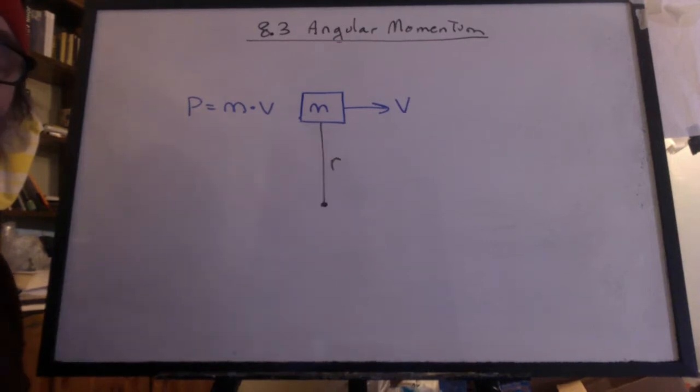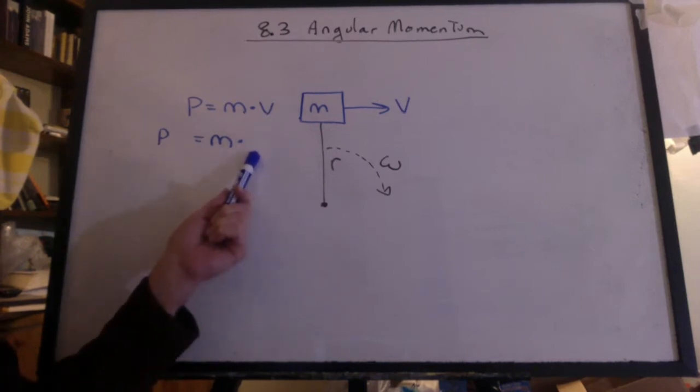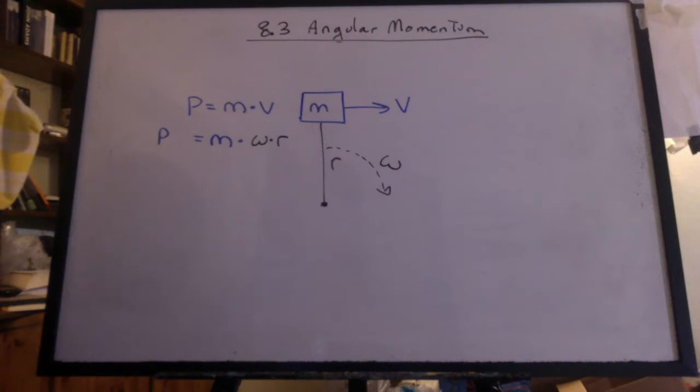But what if we mounted that mass on a massless rod rotated about a pivot? It's now going to have an angular velocity. How can I get rid of v and use omega? Omega times r.